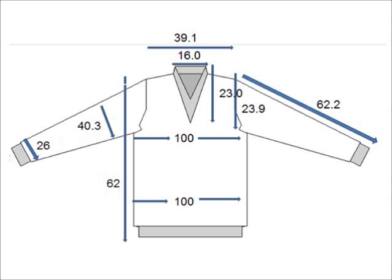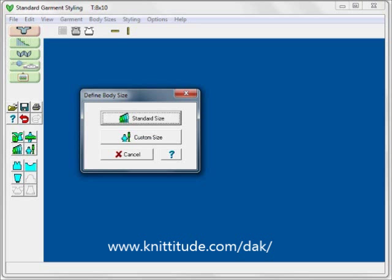Now let's look at our second sweater. This is for an adult male — my teenage son, he's 6 foot 2 and very thin. This is 100 centimeters around the waist, 100 centimeters around the chest, 62.2 down including the ribbing. That includes the ribbing and also the shoulder drop. Let's go into designing it.